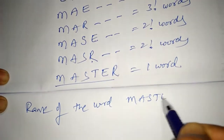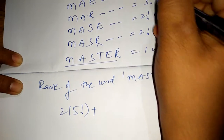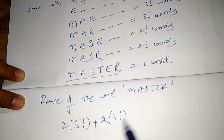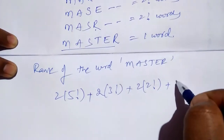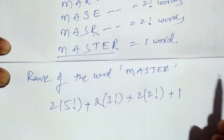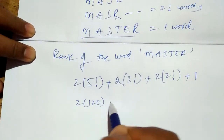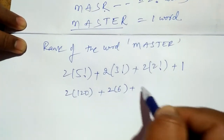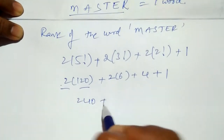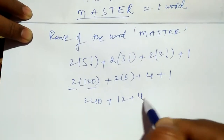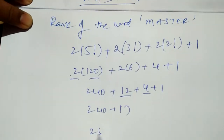To find the rank, we add all the counts: 5! appeared twice, so 2 × 5! = 2 × 120 = 240. Then 3! appeared twice: 2 × 3! = 2 × 6 = 12. Then 2! appeared twice: 2 × 2! = 2 × 2 = 4. Plus 1 for the word itself. Total: 240 + 12 + 4 + 1 = 257.